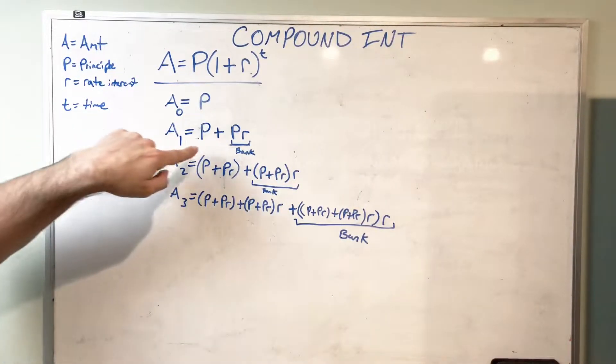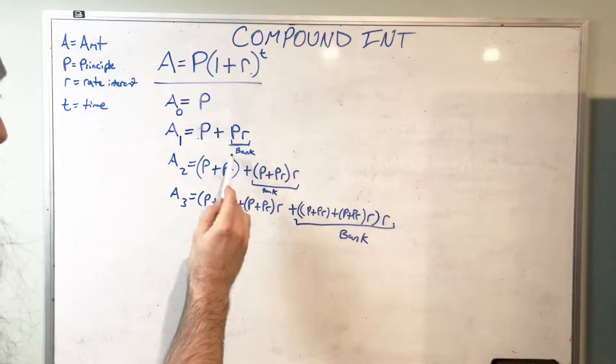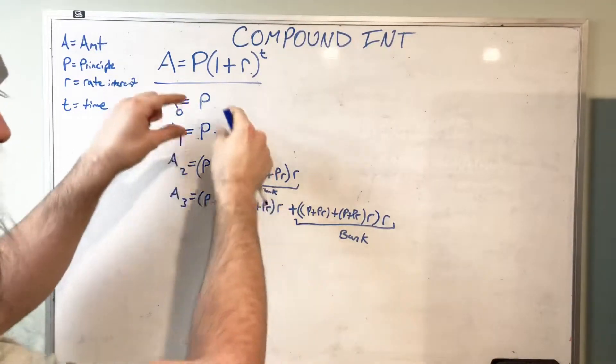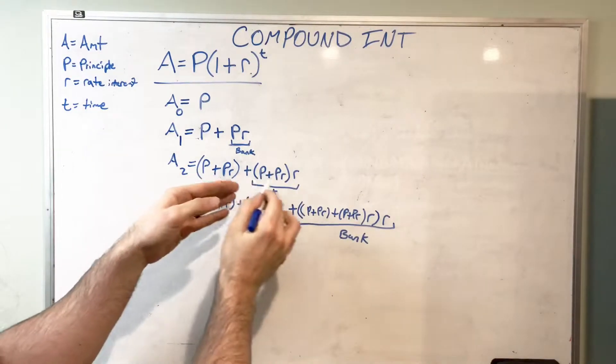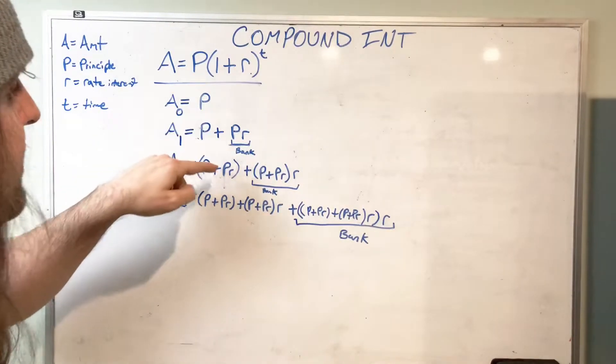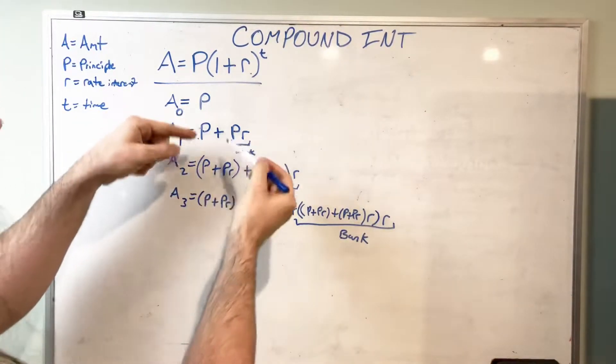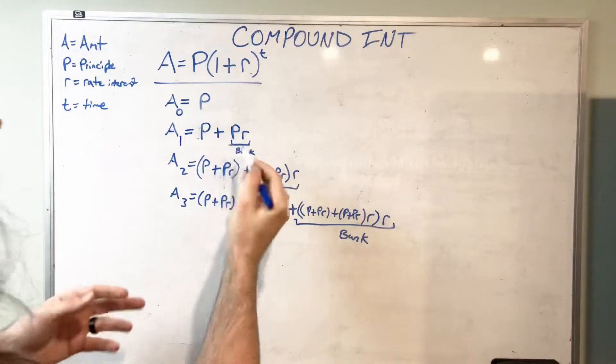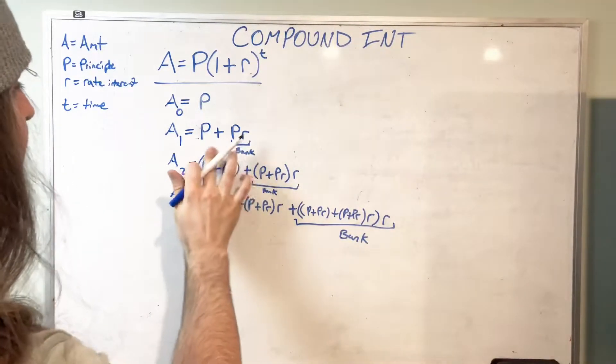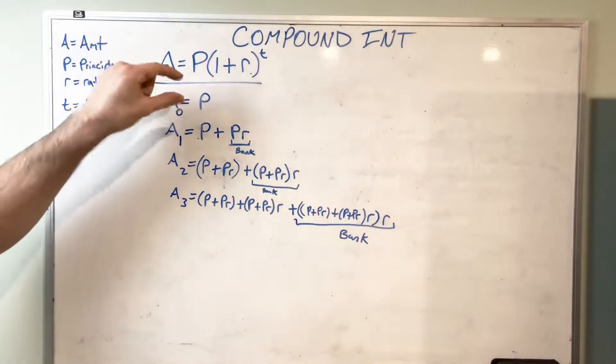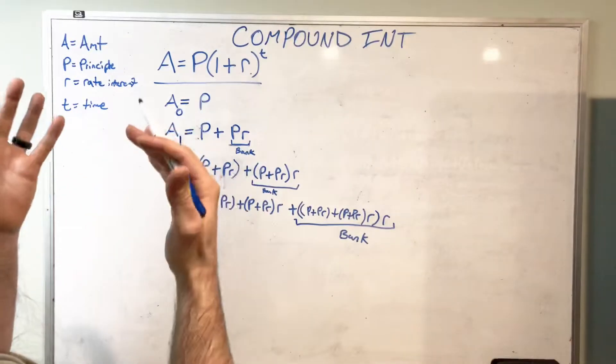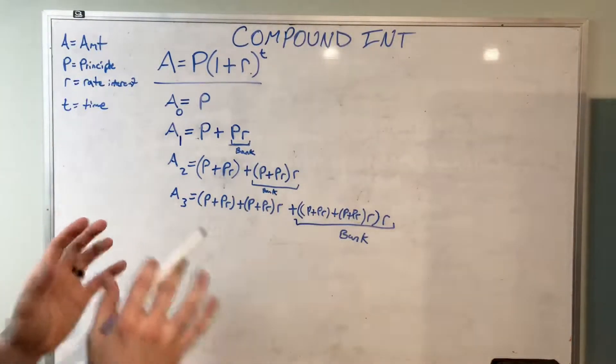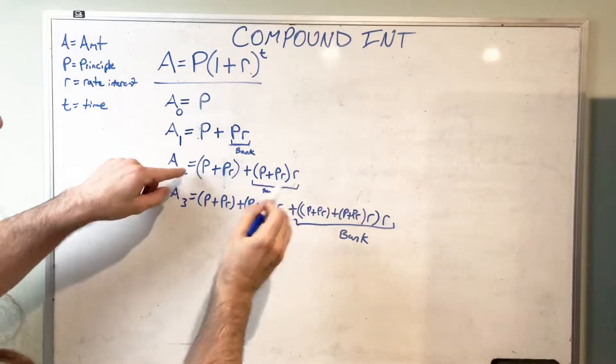So after that first year, you have your principal amount, then you have what the bank pays you. Second year, now instead of just principal, you have that whole amount: principal plus principal times the interest. That's what you have. And then plus what the bank pays you. Making the leap from here to here is very important to really see how you get from here to here.